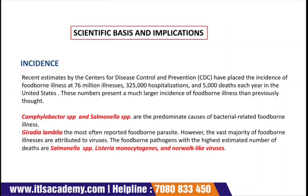Regarding the scientific basis: the CDC estimated an incidence of foodborne illness at 76 million illnesses, 325,000 hospitalizations, and 5,000 deaths each year in the US. These numbers represent a much larger incidence of foodborne illness than previously thought. One of the most predominant causes of bacterial-related foodborne illness is Campylobacter species and Salmonella species. Giardia lamblia is one of the most often reported foodborne parasites.